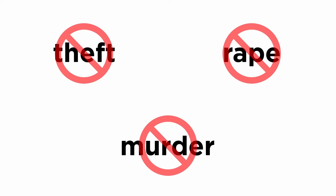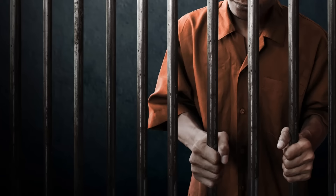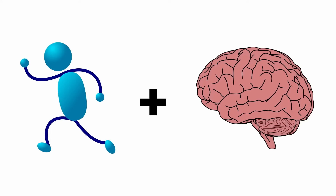Now let us understand the definition of crime. The notion that acts such as theft, murder, and rape are prohibited is universally accepted. What makes such acts a criminal offense is the law of the land. Every state has the right to restrict a person's liberty if they commit a crime. A crime is said to have been committed when a voluntary act or omission is accompanied by a specific state of mind.